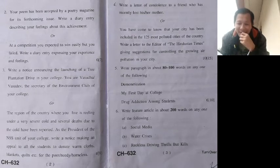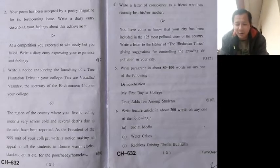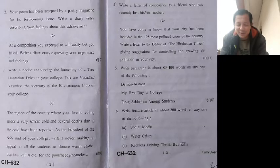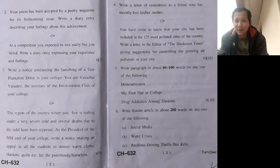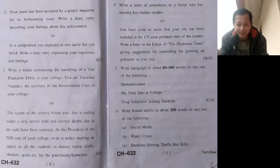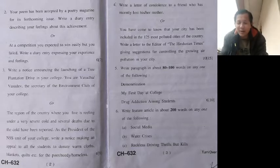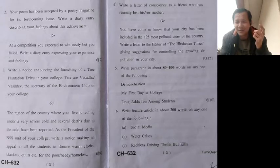The other option is a formal letter: your city has been ranked among the 125 most polluted cities in the country, so you need to write a letter to the Hindustan Times giving suggestions for controlling the growing air pollution in your city. Imagine you are in some city — Delhi, Bombay, Kanpur, Shimla, Kullu — whatever city you want to create. Talk about how air pollution can be reduced. It's similar to letters to the editor that you find in newspapers — write something like that.